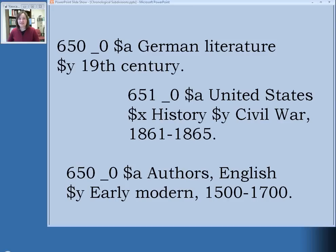The third example is another topical heading with a 650 tag. 'Authors, English' goes in subfield A as the main heading. And then there's a subfield Y for the chronological subdivision, which is 'Early modern, 1500 to 1700.'